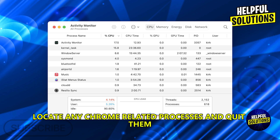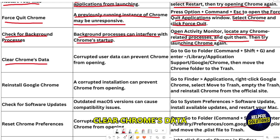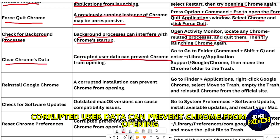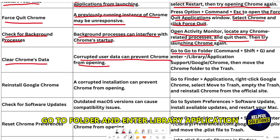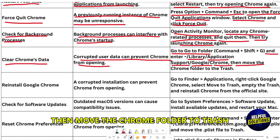Locate any Chrome-related processes in Activity Monitor and quit them, then try launching Chrome again. Clear Chrome's data — corrupted user data can prevent Chrome from opening. Go to Folder and enter Library/Application Support/Google/Chrome.